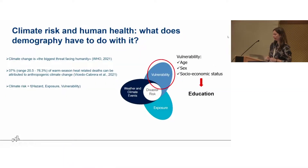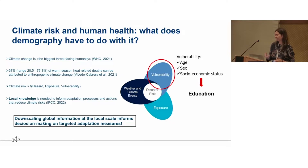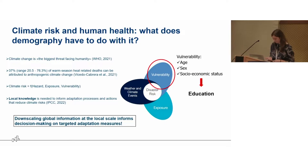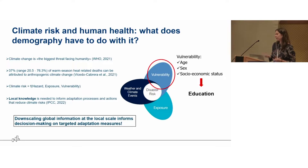From the recent IPCC report, working group two on impacts and adaptation, they really stress the importance of understanding the local knowledge or getting information at the very local level. From climate science, it is very common to hear about downscaling methods of climate data. Here we argue it is very important to do the same for other socioeconomic variables. Specifically, this downscaling of global information is very relevant for targeted adaptation measures and informing local decision making.